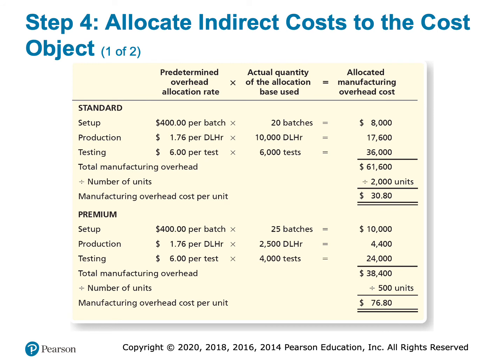Just like we allocated the standard model, we're going to allocate the premium model: $400 per batch times 25 batches, $1.76 per direct labor hour times 2,500 direct labor hours, $6 per test multiplied by 4,000 tests. Notice that total overhead for the premium model is $38,400. If we add the standard model's total overhead plus the premium model's total overhead, that adds up to $100,000 — the total overhead. We're doing the exact same thing as before, just allocating it in a more sophisticated manner. Since we expect to make 500 units of the premium model, we divide by 500 and get $76.80 per unit.